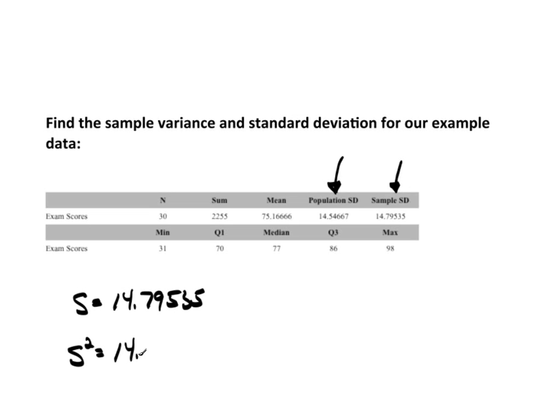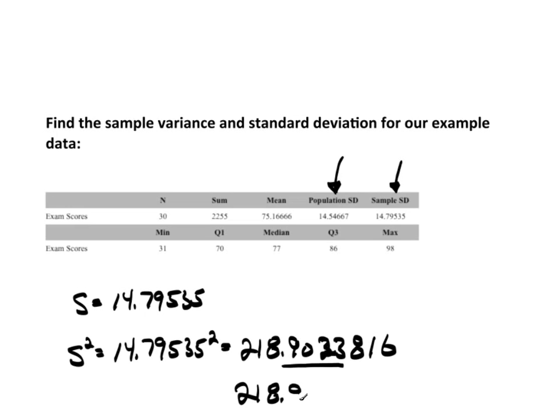So, S squared, the variance, is 14.79535 squared, which gives me 218.9023. Well, my calculator went out this far, but typically I only go out four places. So, if I was actually only going out four places, I would have rounded this off and said 9024. I would have reported that as a sample variance.